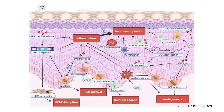UV radiation also affects the extracellular matrix by inducing fibroblast activation. These fibroblasts upregulate matrix metalloproteinases, leading to ECM degradation and creating an environment conducive to tumor progression. All of these processes converge on three critical outcomes: ROS and inflammatory signals allow damaged cells to bypass apoptosis; suppression of the immune system enables malignant cells to evade detection; and persistent DNA damage leads to genetic alterations that drive melanoma development. Together, these processes set the stage for melanoma by enabling cell survival, immune escape, and mutagenesis.